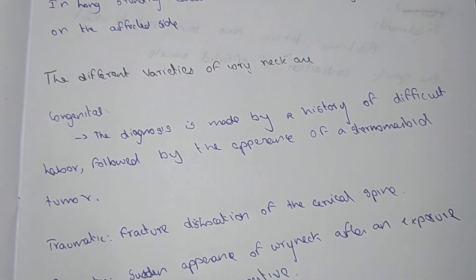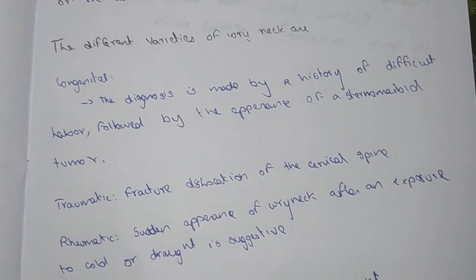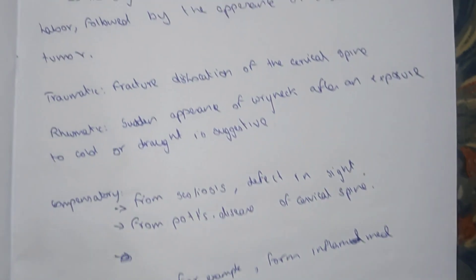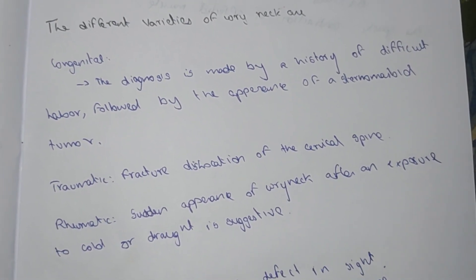There are different varieties of wry neck: congenital, traumatic, compensatory, and inflammatory. These are the different types.